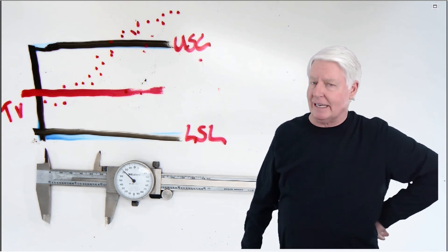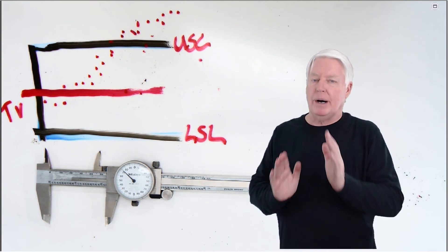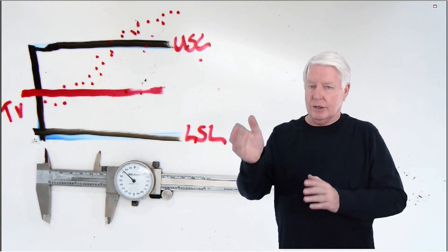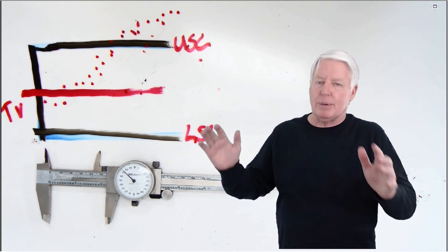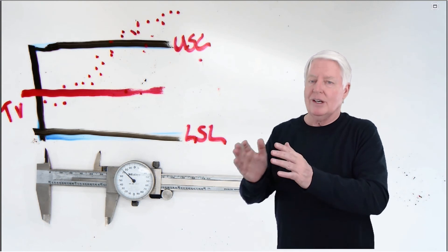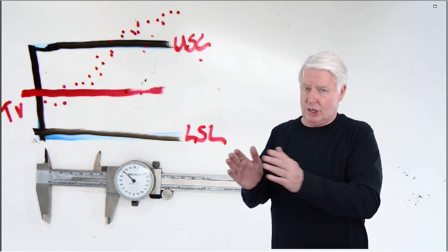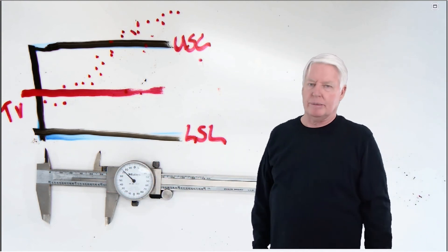So linearity is a problem. Again, what is linearity? Change in bias. What is bias? The true value to the measured value. A change in bias over the operating range of the instrument. Remember, drift was a change in bias over time. Linearity is a change in bias over the operating range of our instrument. Hopefully that was helpful.